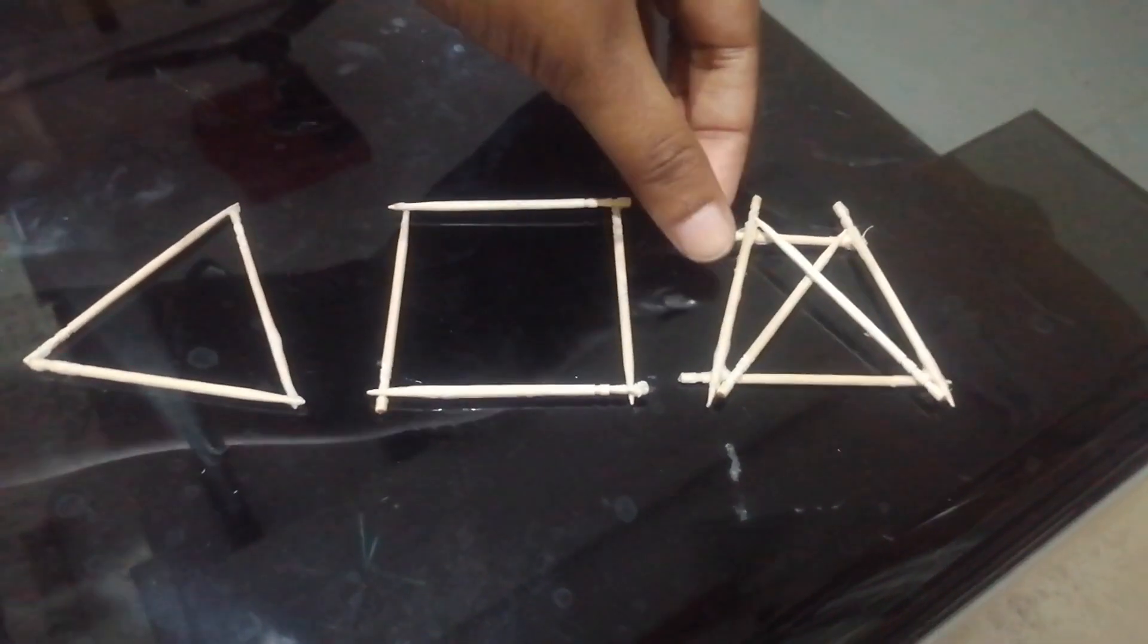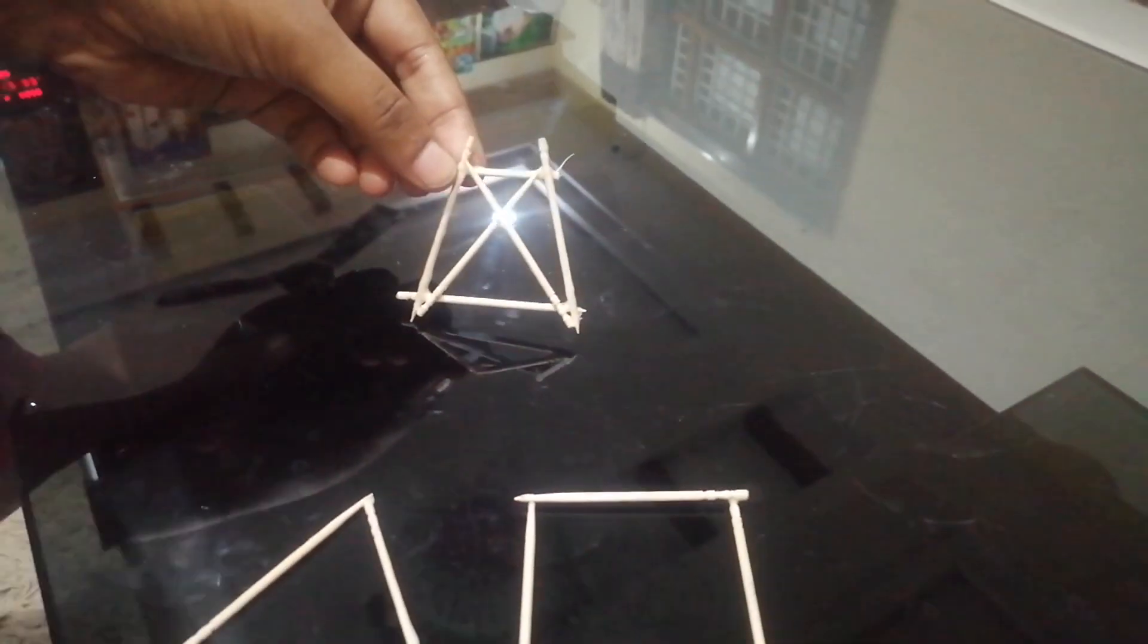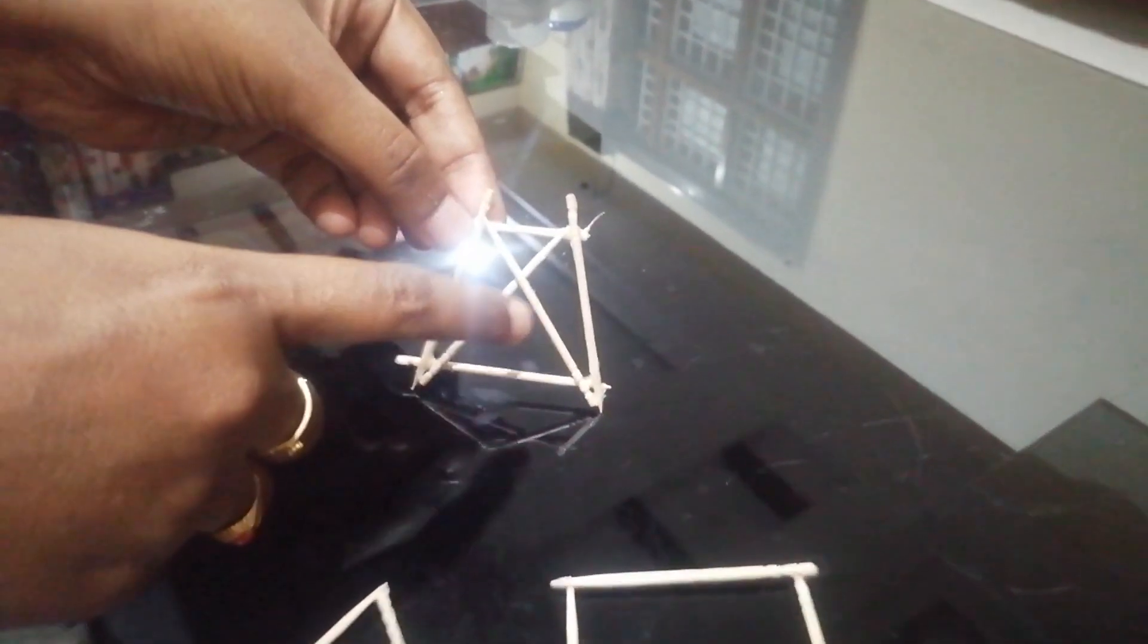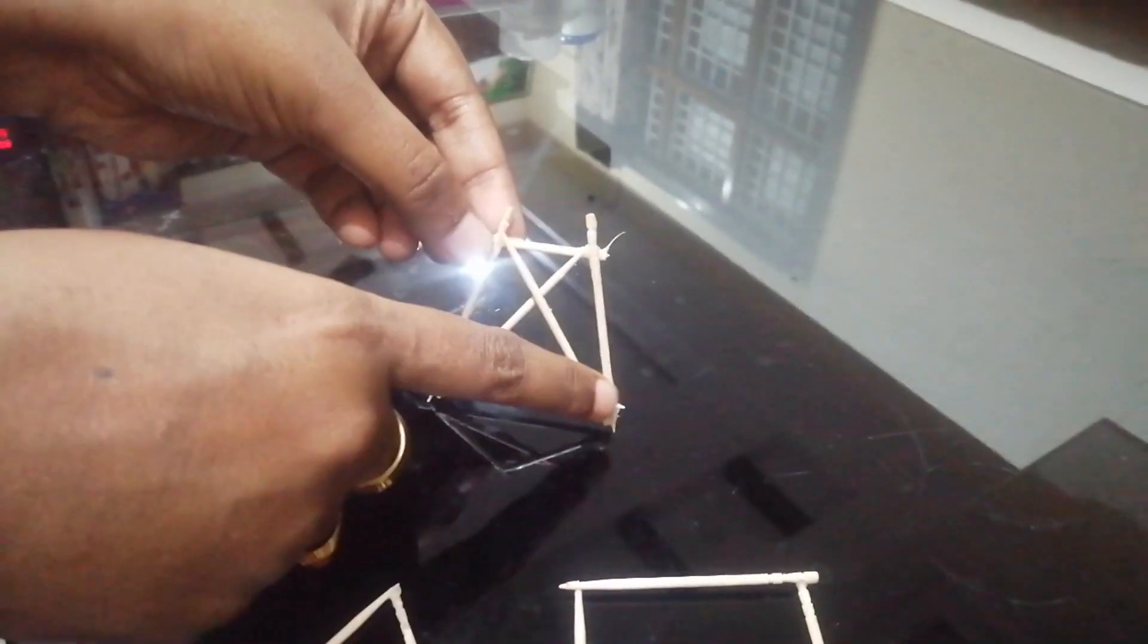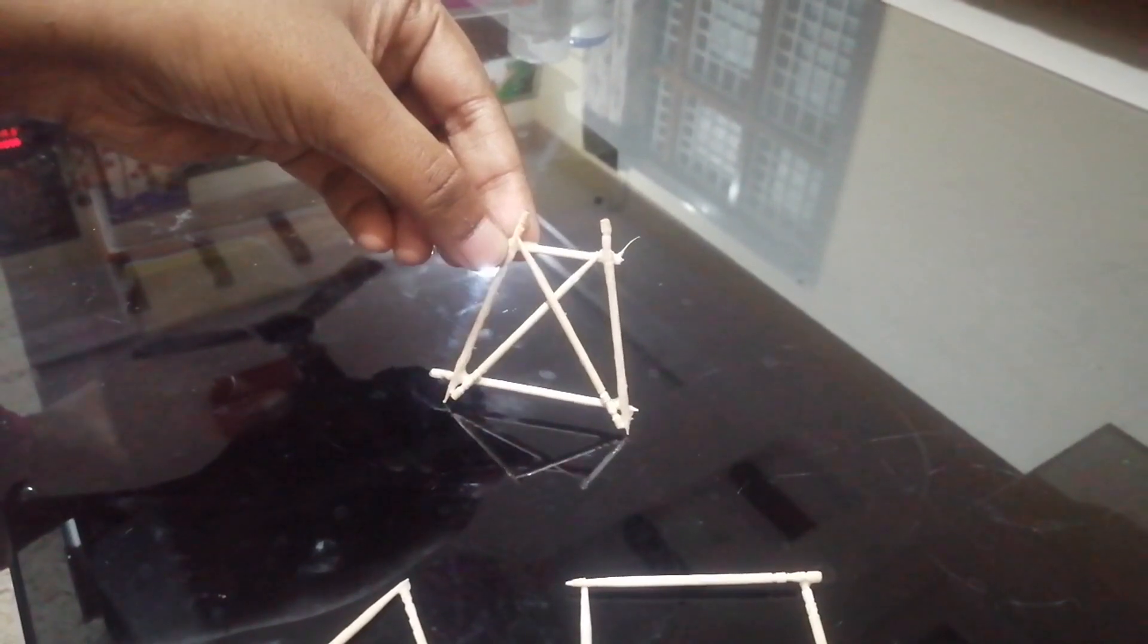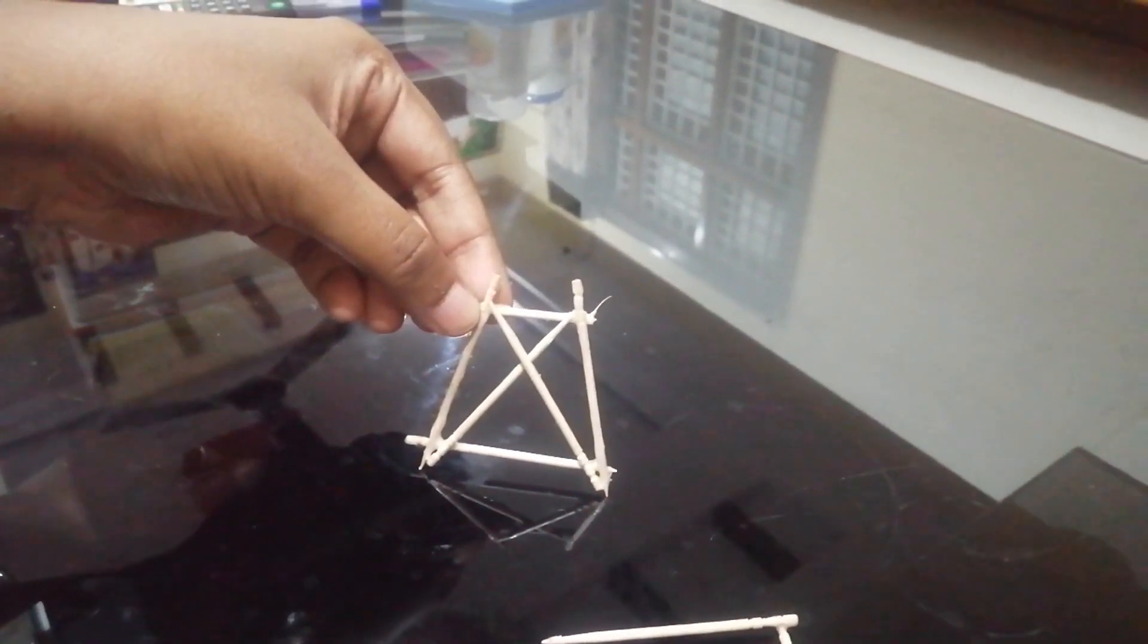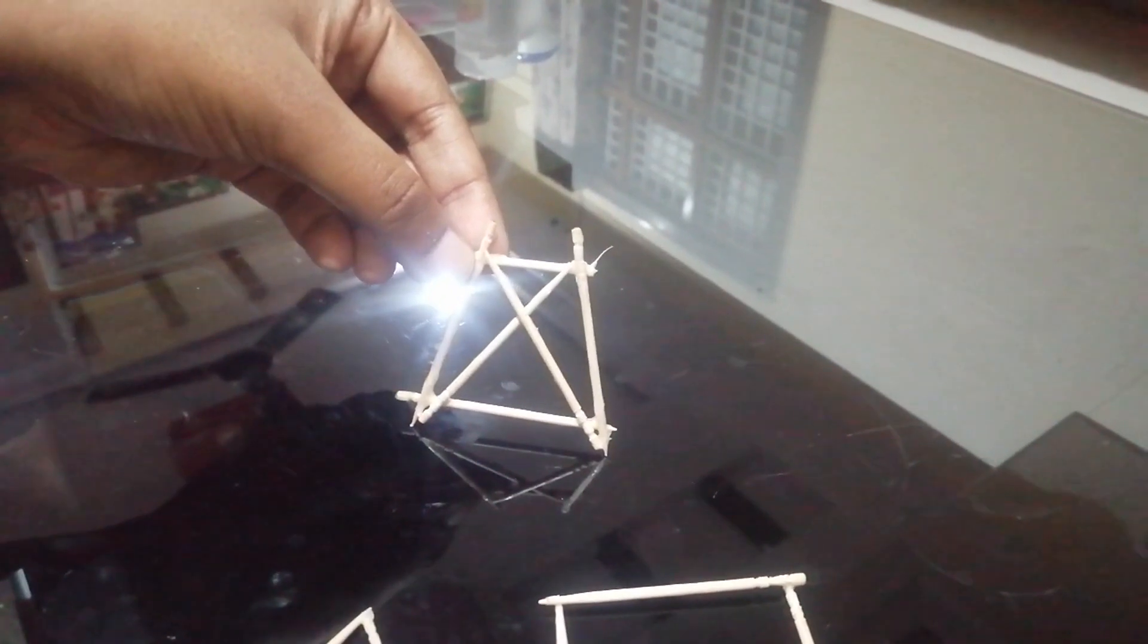Next, look at this frame. Here 1, 2, 3, 4, 5, 6 members, 1, 2, 3, 4, 4 joints and the condition M equals 2J minus 3 is not satisfied and it is M is greater than 2J minus 3. This can be called as redundant imperfect frame.